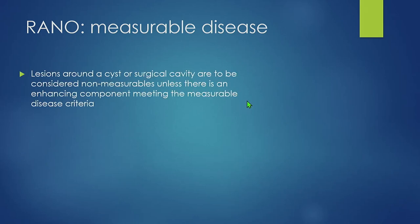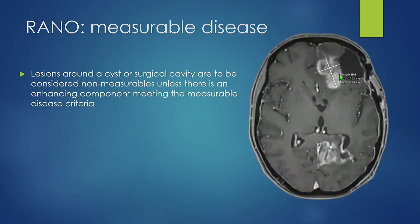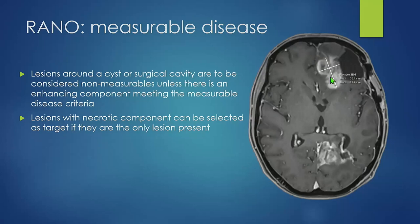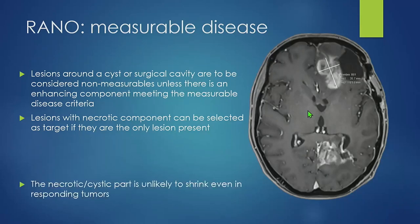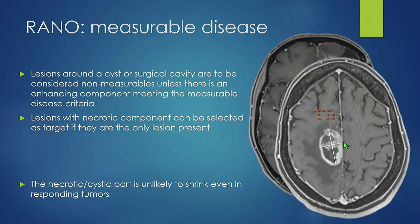Some issues with measurable disease: lesions around a cyst or surgical cavity are considered non-measurable unless there is an enhancing component meeting the measurable disease criteria. For example, this is a relapsing multicentric glioblastoma — here is the surgical cavity, and we have this new measurable enhancing lesion adjacent to the surgical cavity, which can be addressed as measurable disease. Lesions with a necrotic component can be selected as a target if they are the only lesion present, as the necrotic cystic part is unlikely to shrink even in responding tumors.